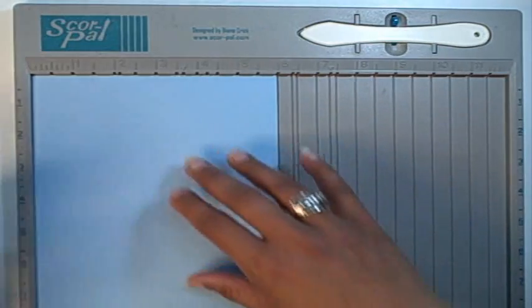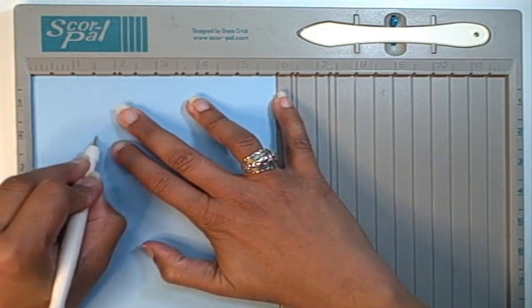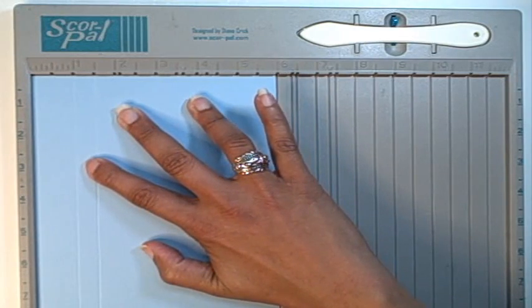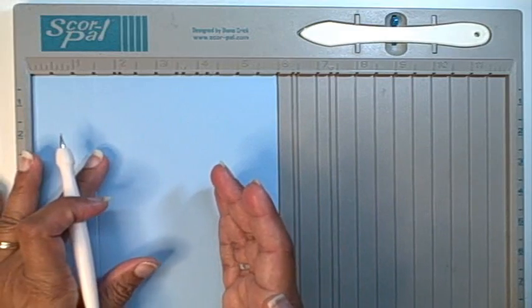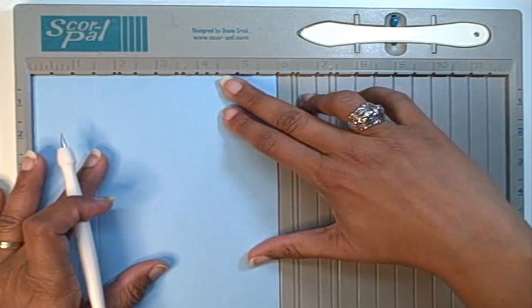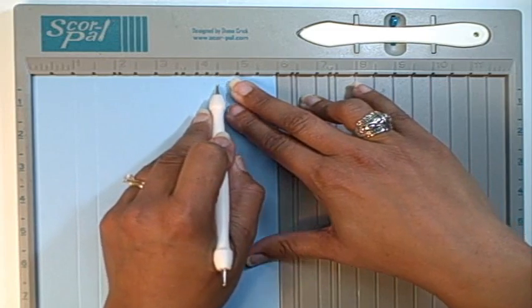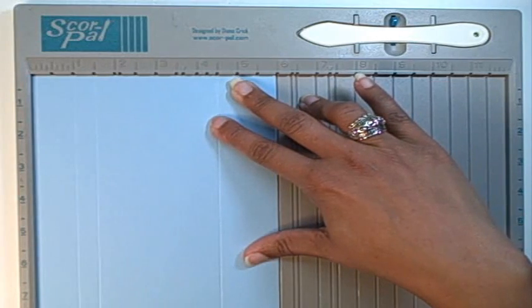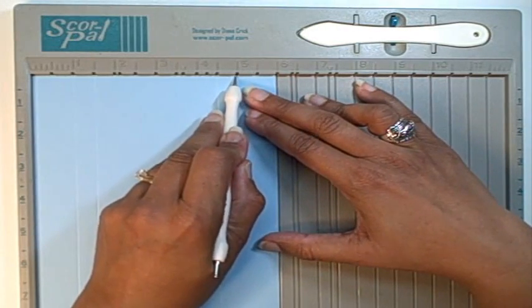The second score is going to be an inch and a half from the left hand side. And then I'm going to move over three more inches, my next score will be at four and a half. And then moving over a half inch more, my next score will be at five.